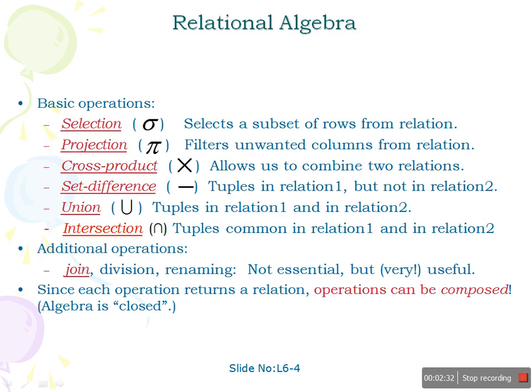These are the basic operators in relational algebra. The first one is selection, which is denoted with the sigma symbol — it selects a subset of rows from a relation and filters all records based on a condition. Projection, using the pi symbol, is used to filter columns, so we can retrieve only specific columns. Cross product is used when we want to join or combine two or more relations, and can be performed even without a common attribute in both tables.